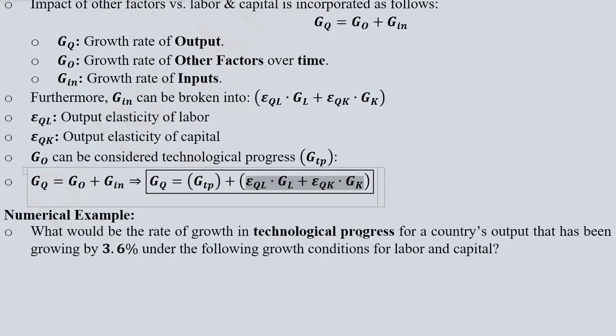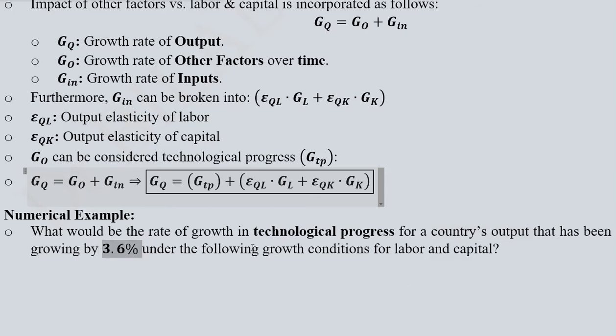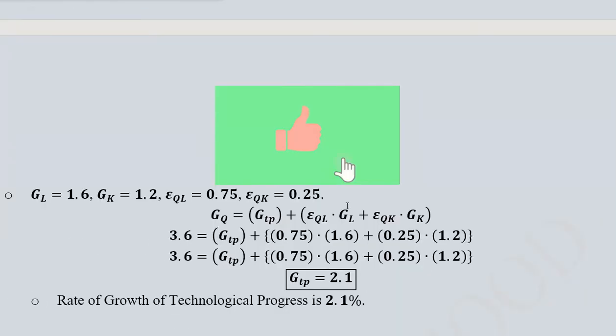Now we can do a little numerical exercise in order to find out the rate of technological progress. This is the country that we are talking about, and its output is growing at 3.6 percent. There are other growth conditions given in this example regarding the labour and capital.